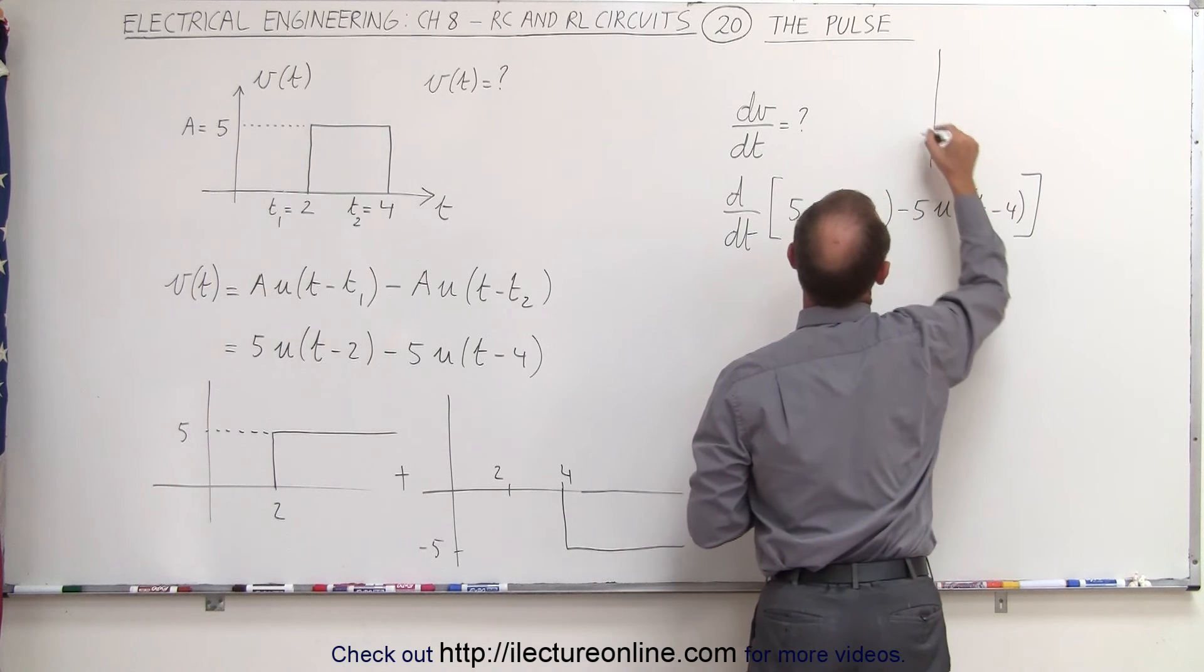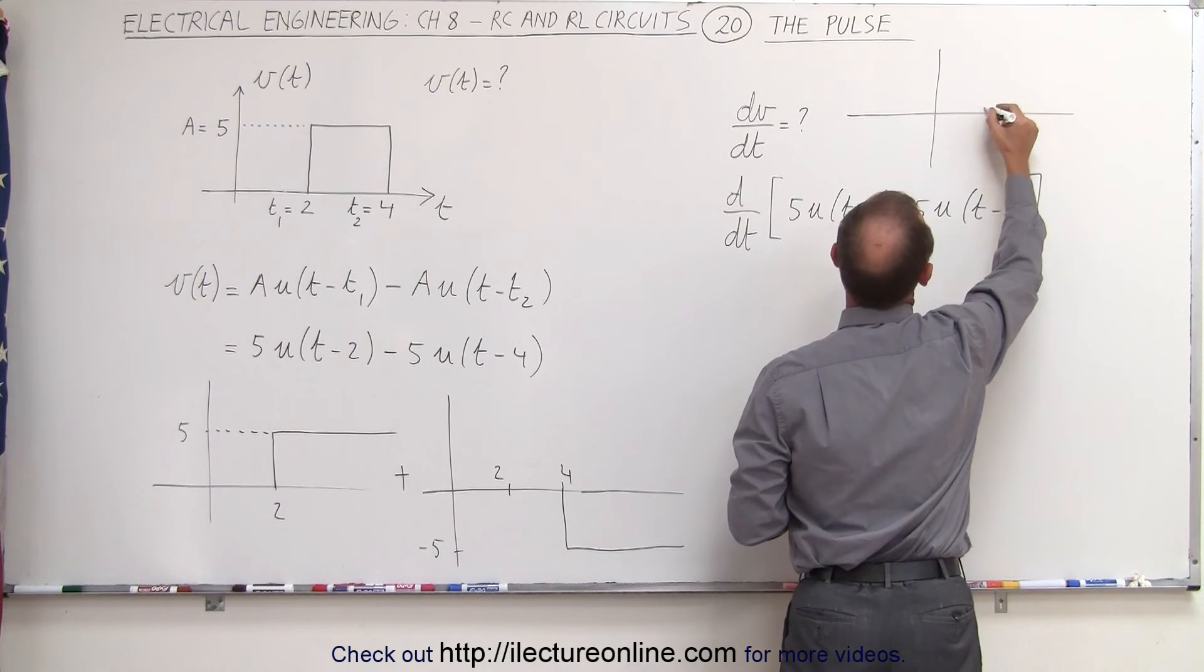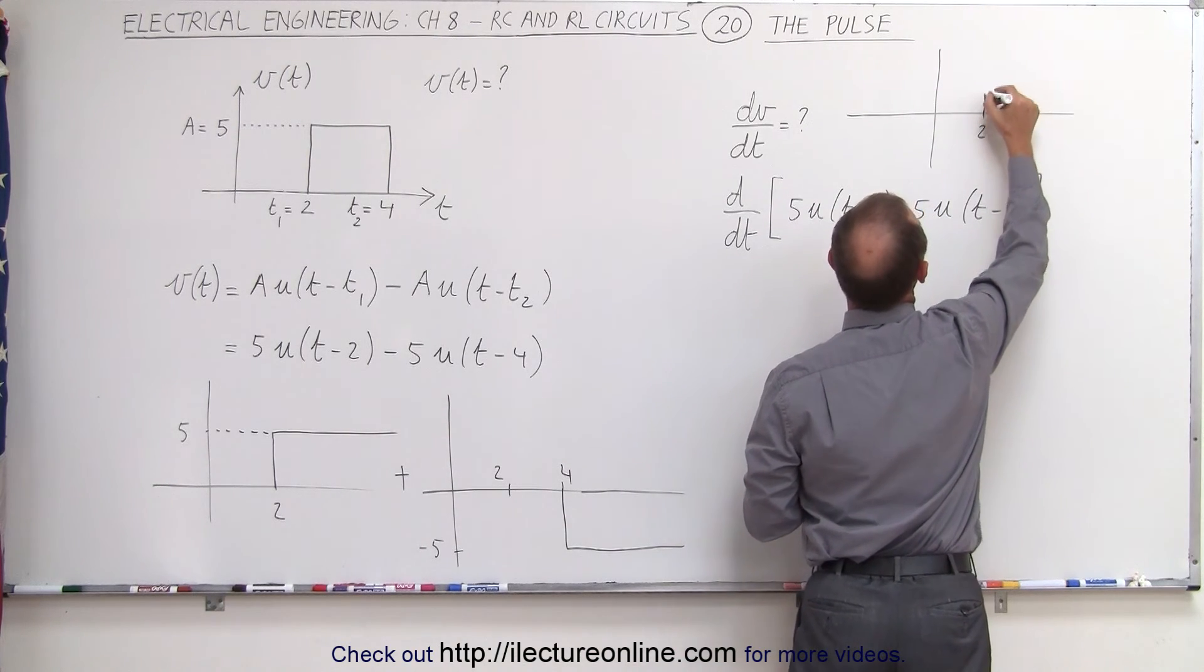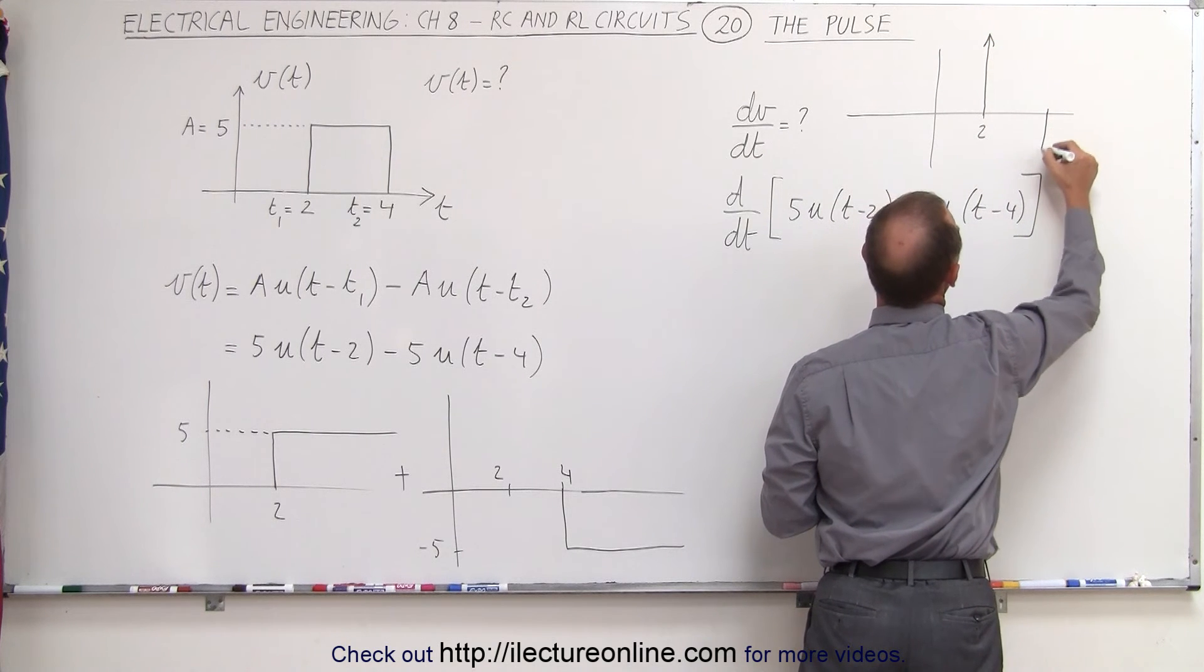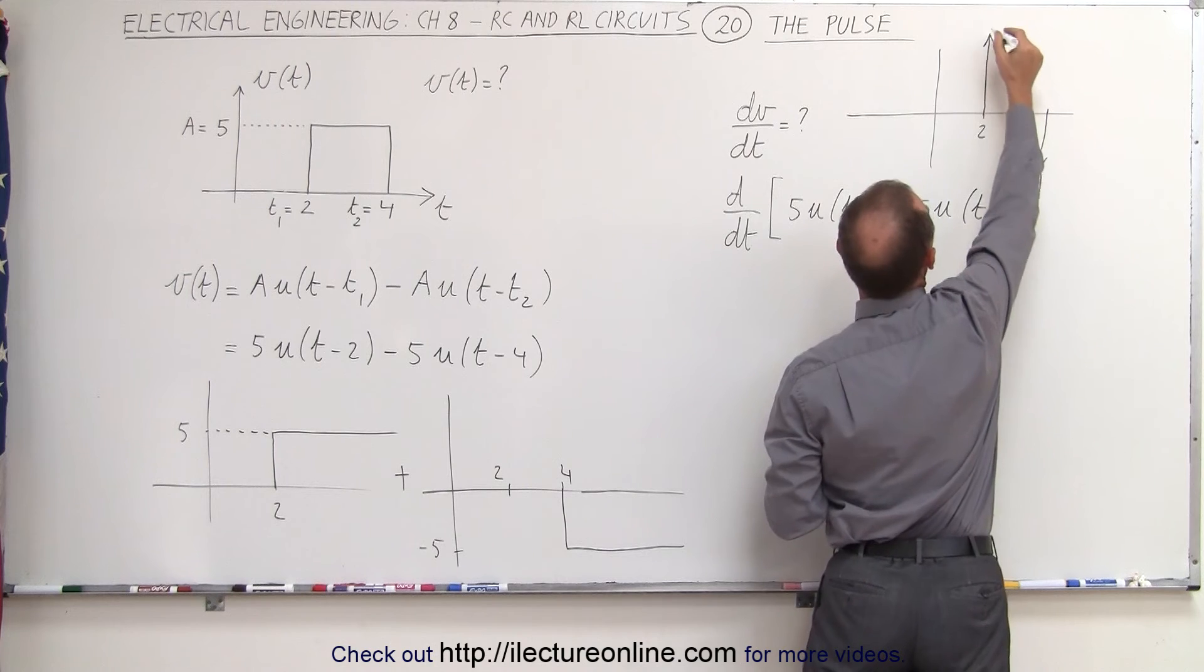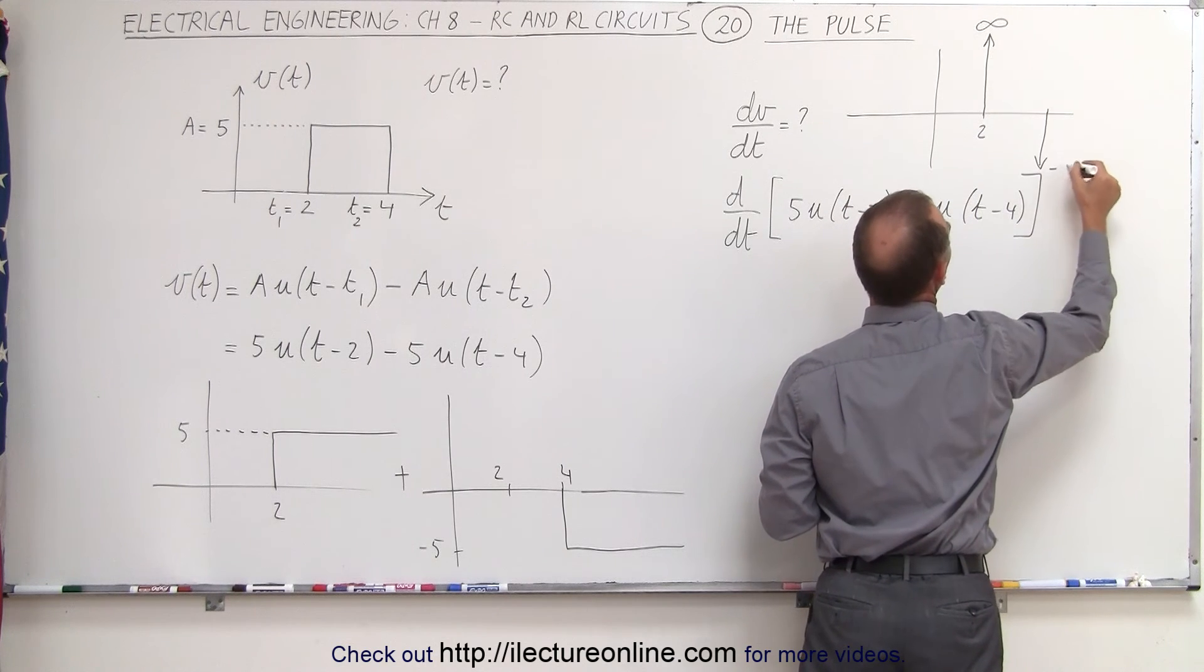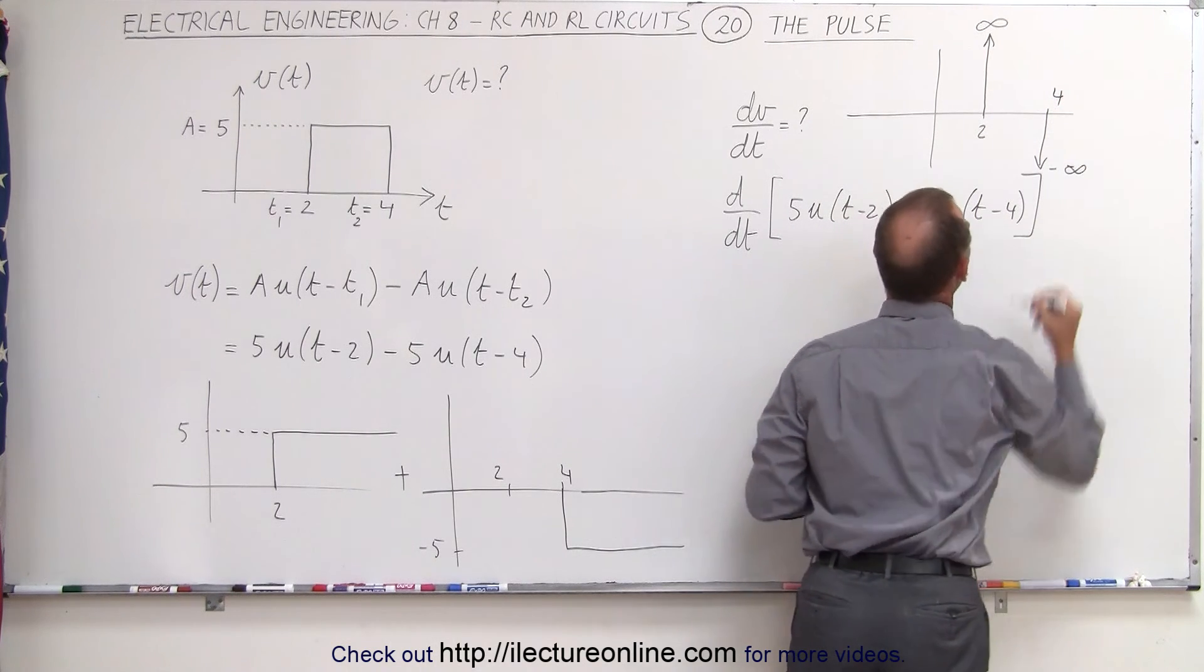Graphically, we would end up with something that looks like this. At time equals two, we end up with a delta function this way, and at time equals four, we'd end up with a delta function in this direction. Of course, that would be infinity here, minus infinity there at four.